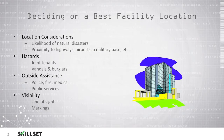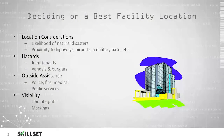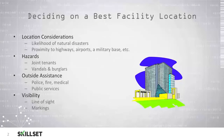You should also consider visibility — whether or not you want a line of sight from the street to your building, whether you want customers to be able to see your building, or if you're trying to keep a low profile. You should also consider markings — whether or not you're going to have signs on the building to describe your company, or if you're trying to keep the company's location quiet, you may not want to have any signs on the building.